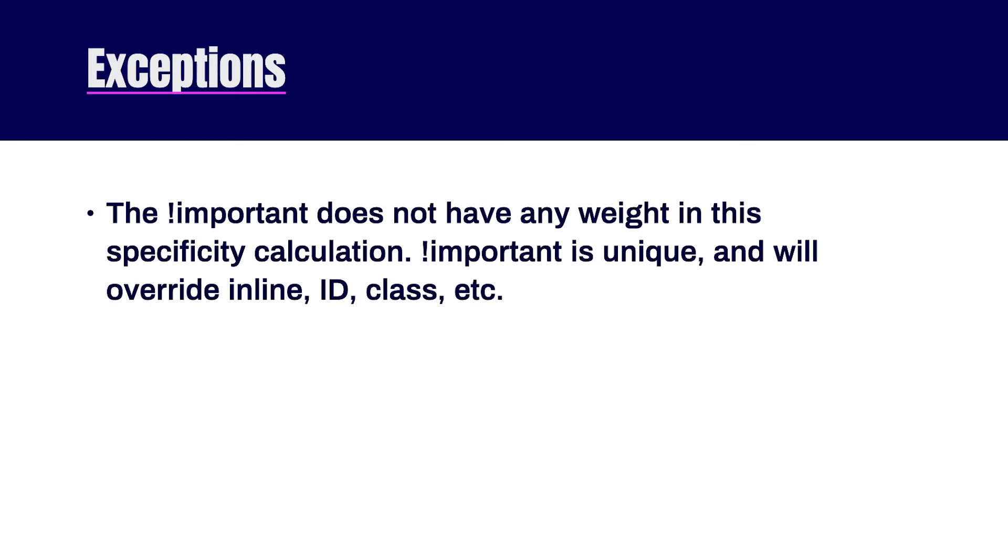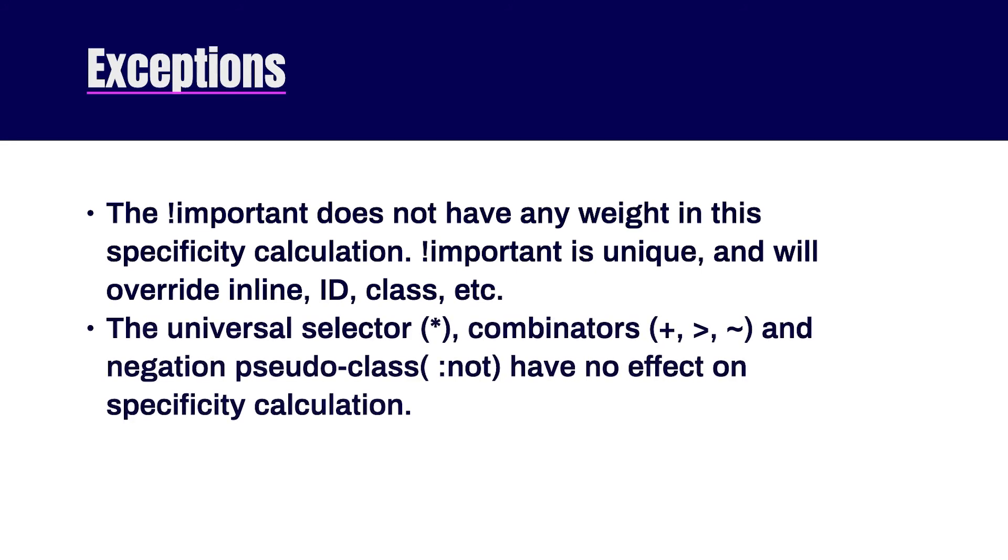Now there are a couple exceptions to this calculation that you need to be aware of. The first is that exclamation important does not have any weight in this specificity calculation. Important is unique and it will override inline, ID, class, whatever you throw at it. The other important exception is the universal selectors, the combinators and the negation pseudo class, like the not, have zero effect on specificity calculation.